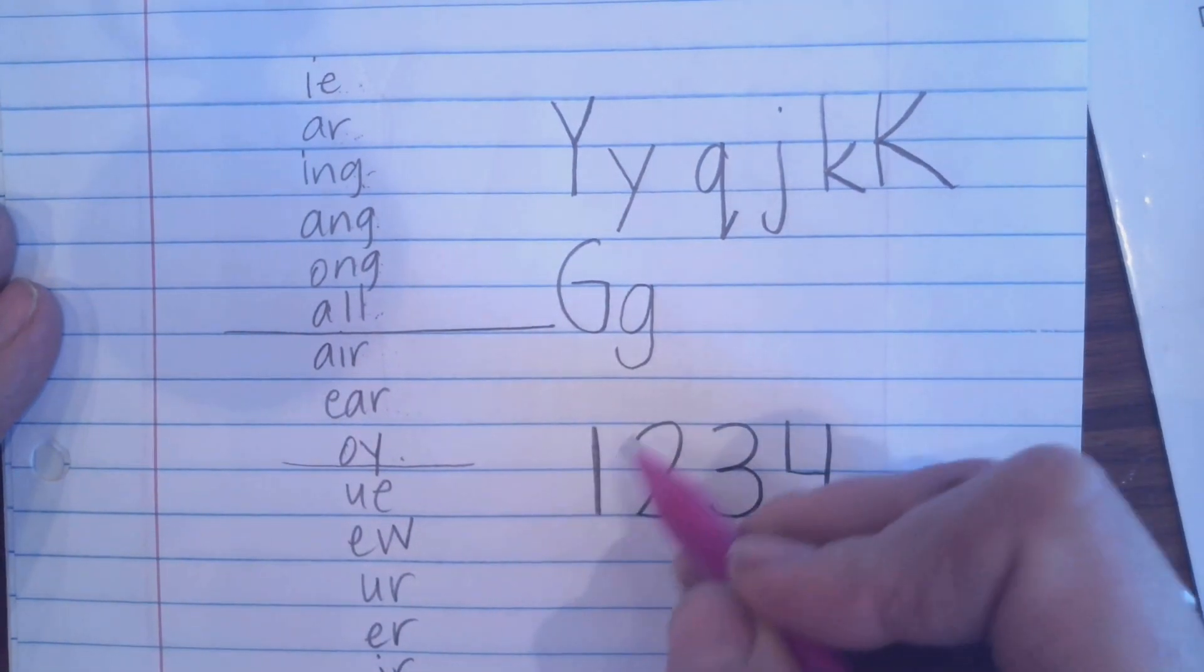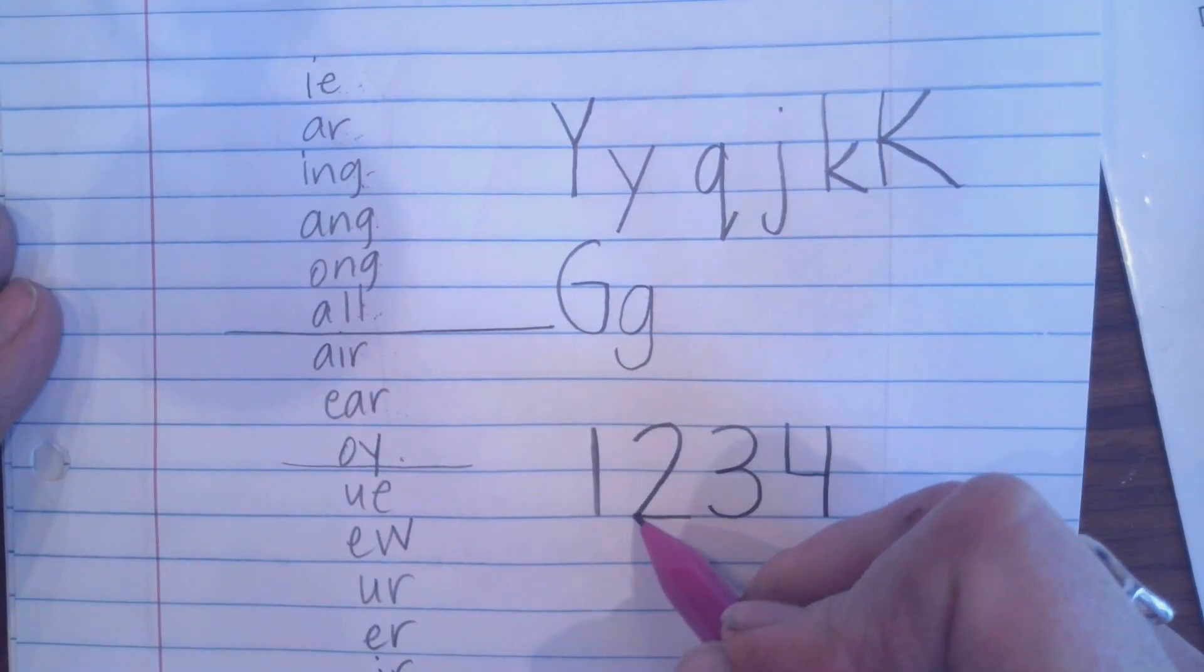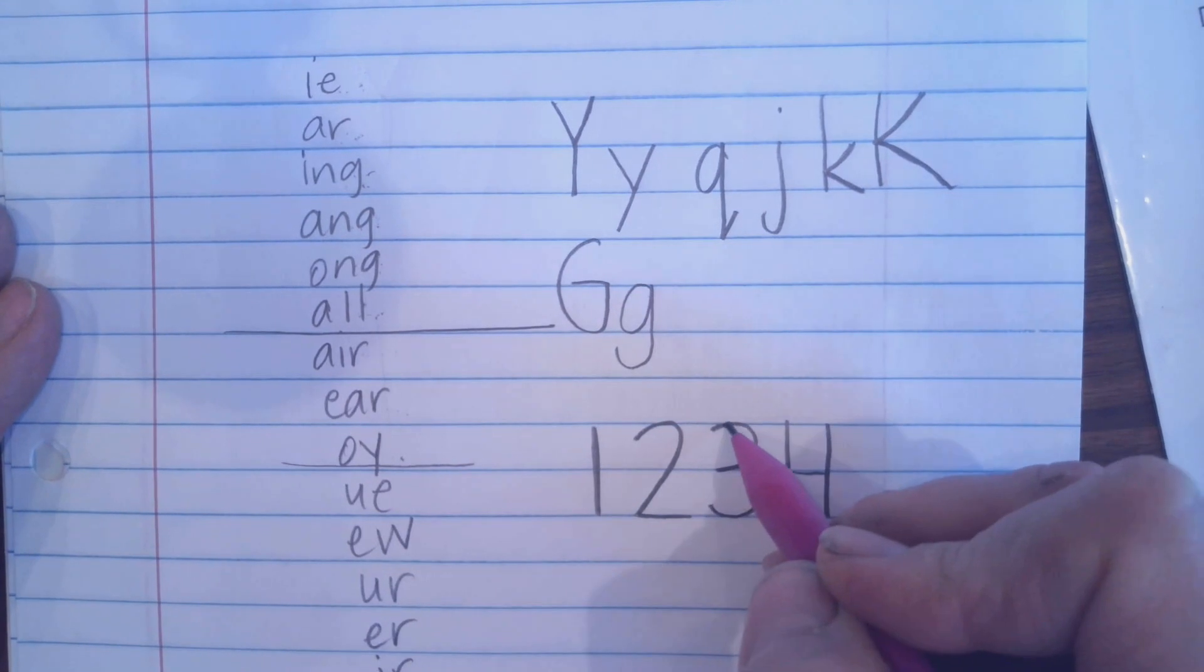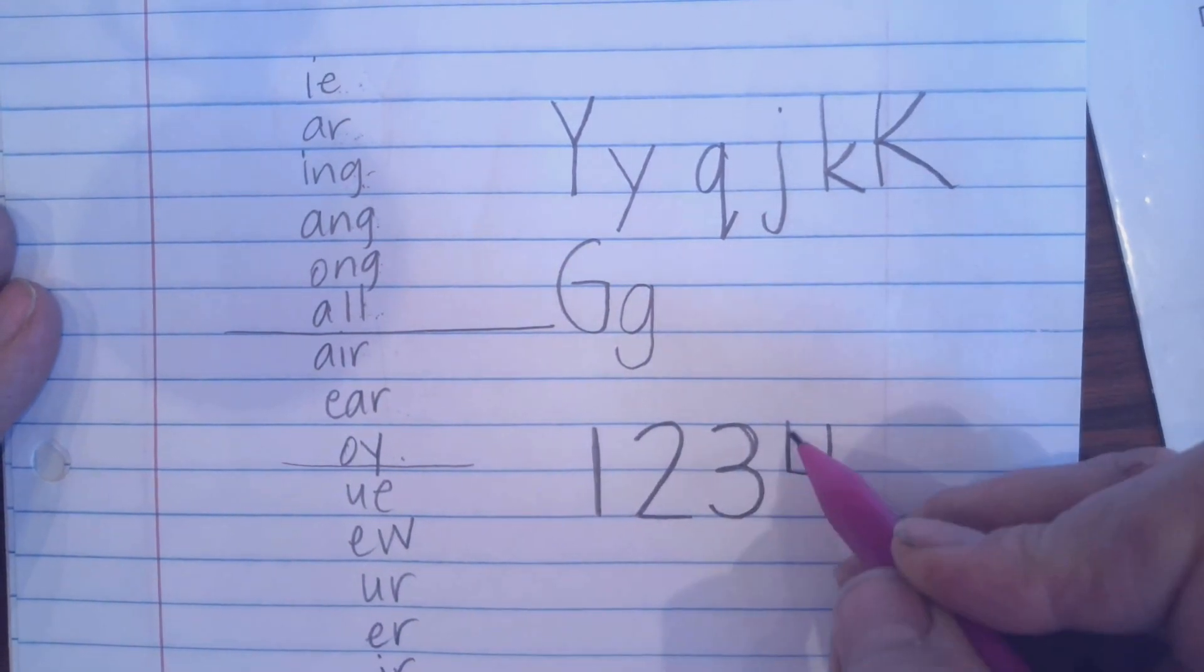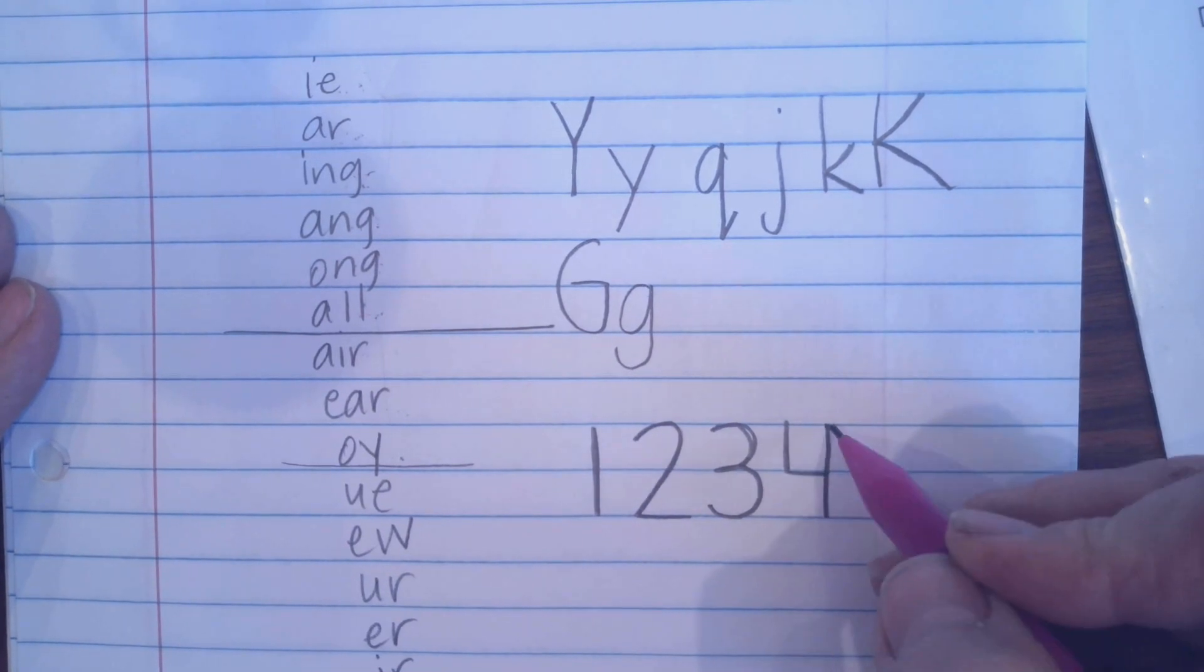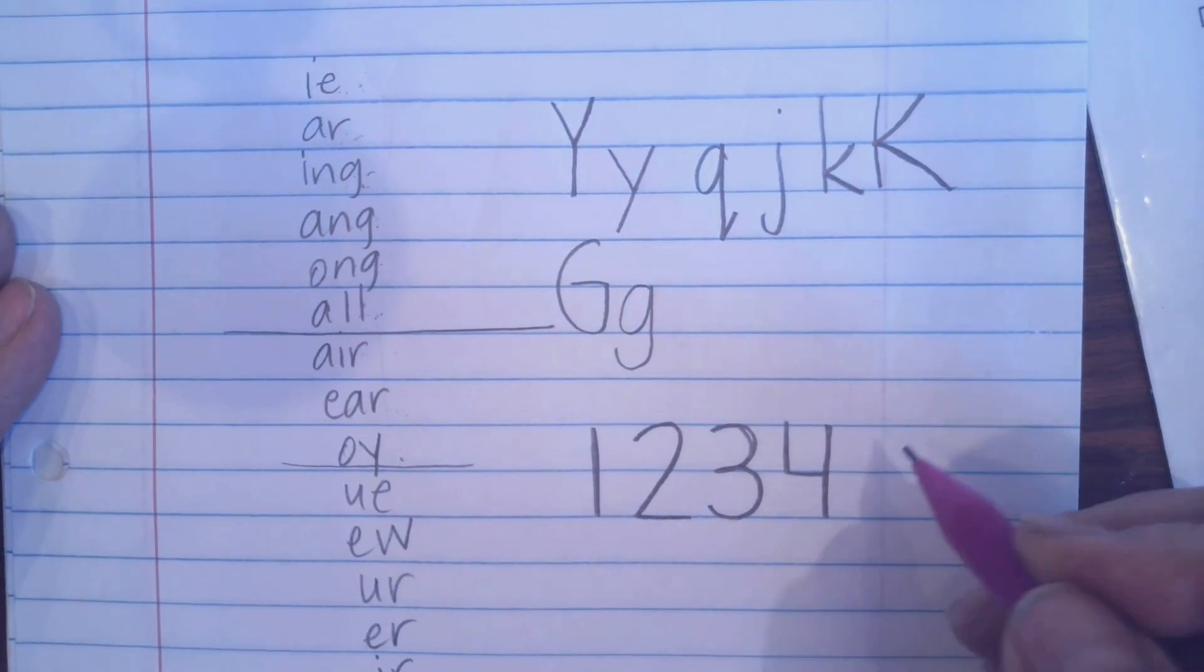So one, two is a half a heart and over. Three is a half a circle and a half a circle. Four is an L shape. And then we come down like this.